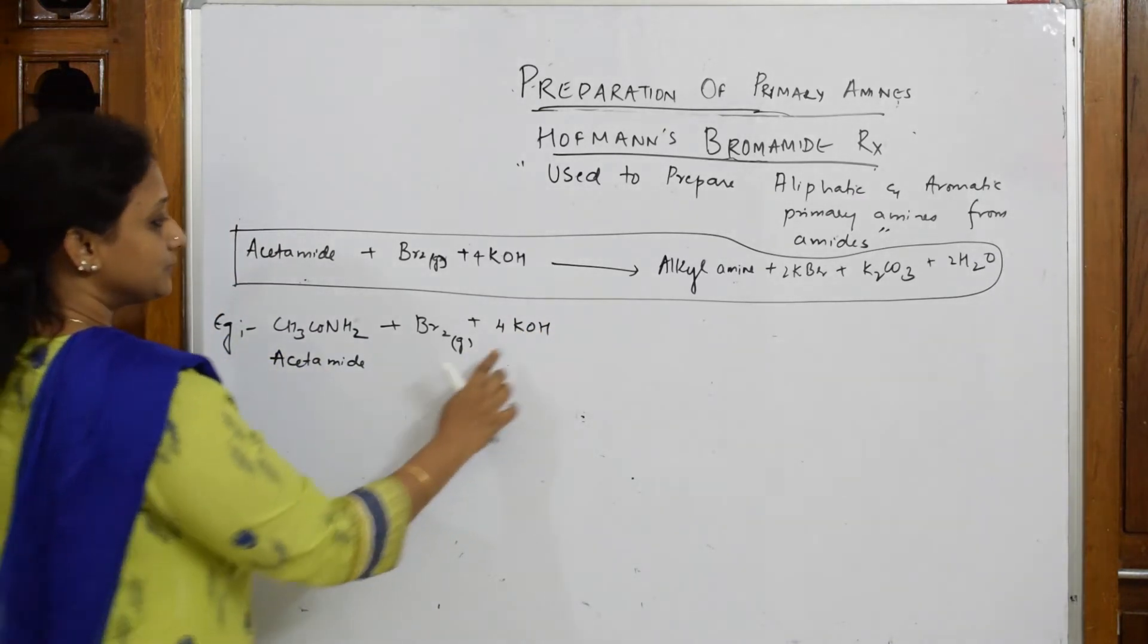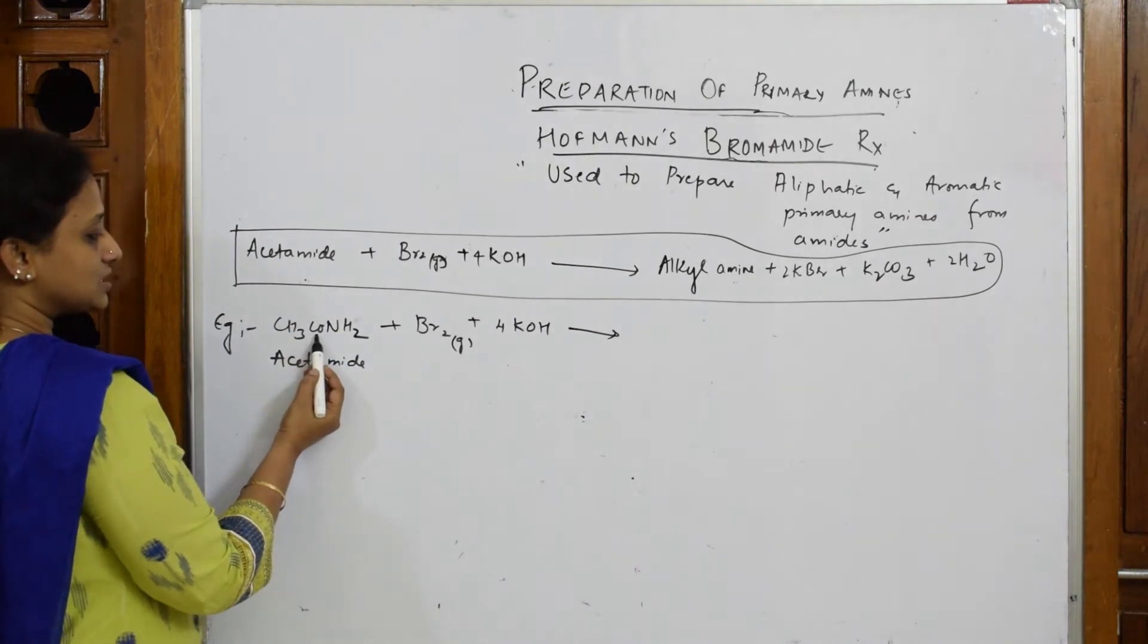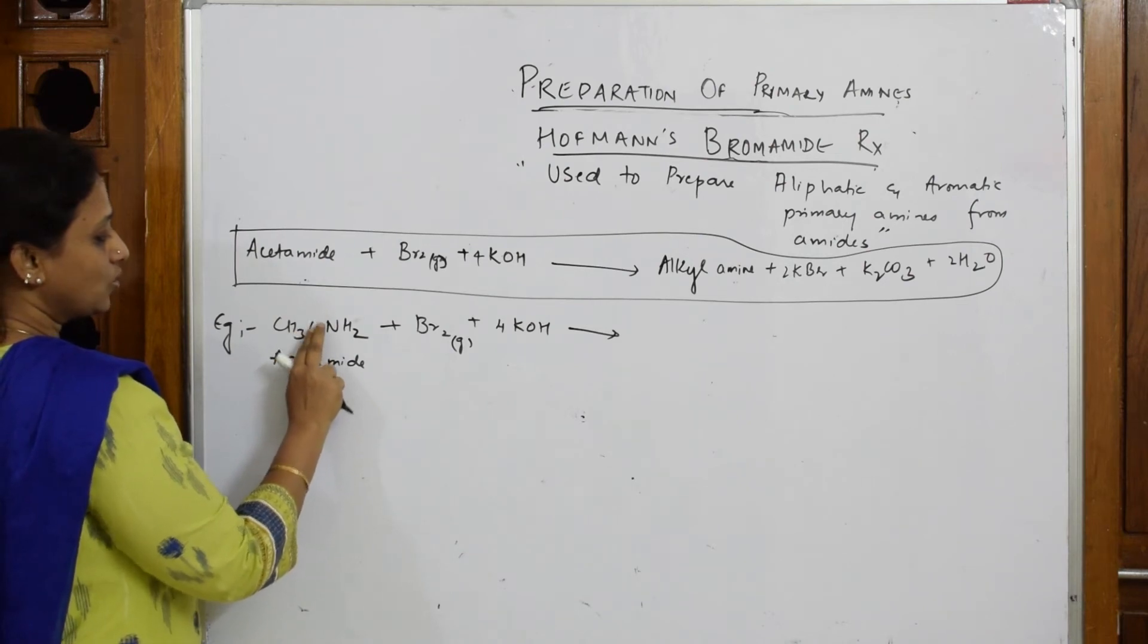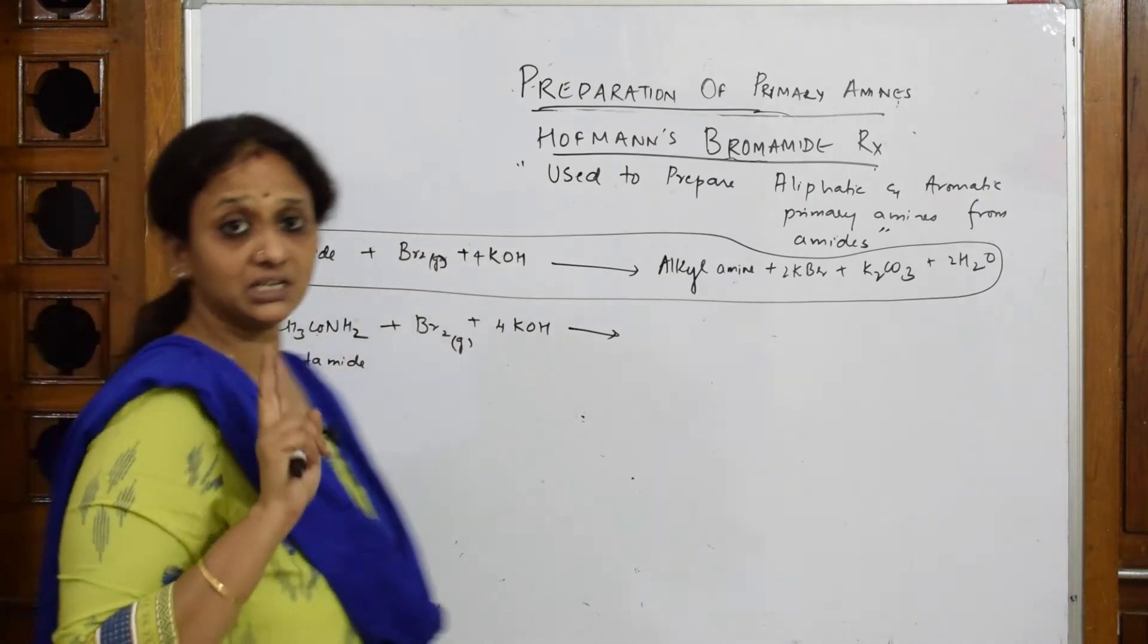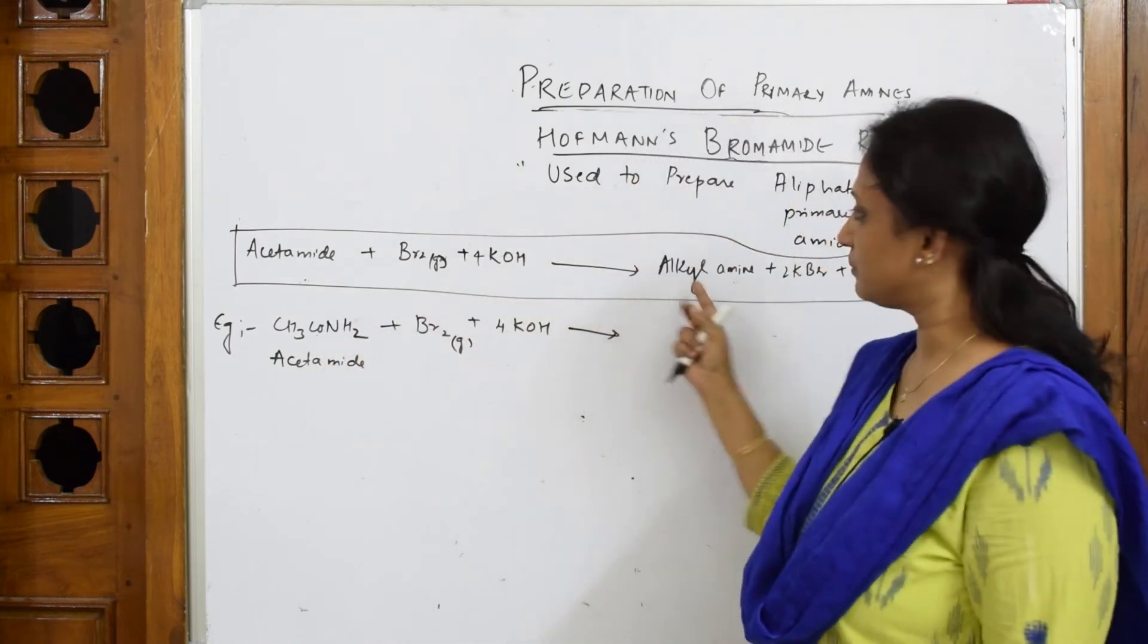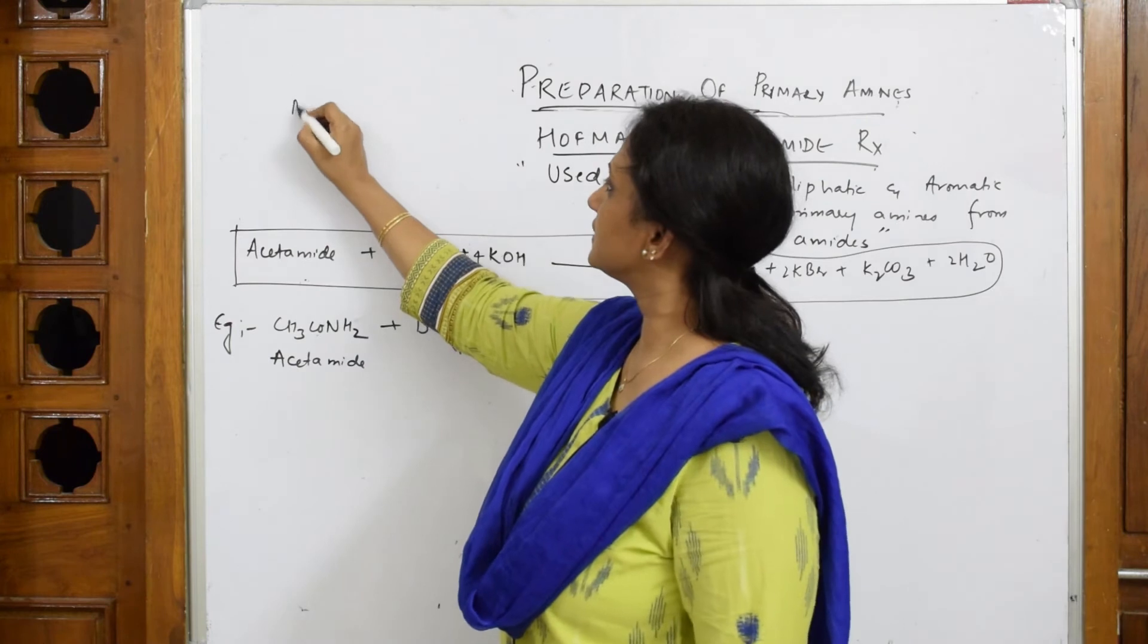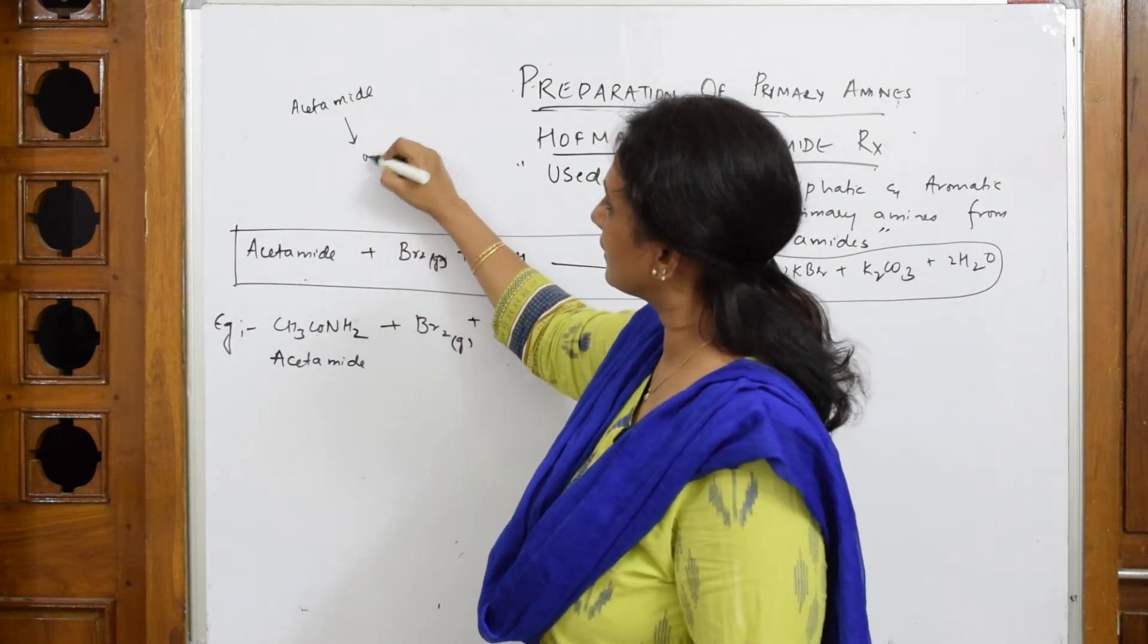Now observe, first important thing, this particular CO is there. Observe carefully, this whole CO will come out with this potassium as carbonate. Why in acetamide or Hoffmann's Bromamide you get an alkyl amine with one carbon less, that is the main concept.